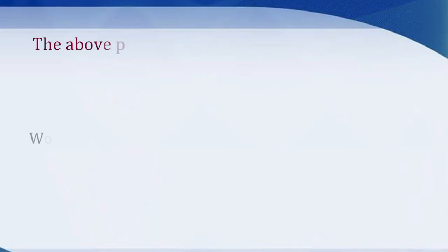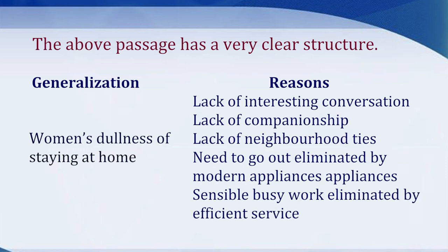The above passage has a very clear structure. Let us now represent the information of the passage in a flow diagram — the generalizations on one part and the reasons on the other. The generalization is women's dullness of staying at home. And the reasons are: lack of interesting conversation, lack of companionship, lack of neighborhood ties, need to go out eliminated by modern appliances, and sensible busy work eliminated by efficient services.